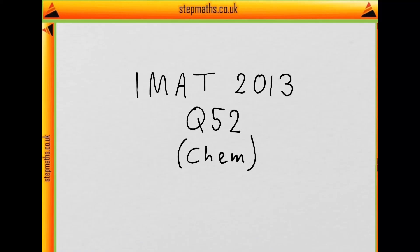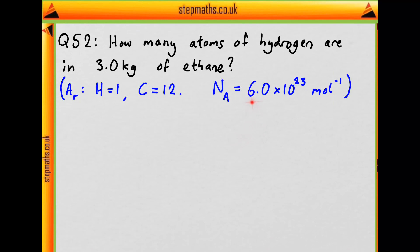This is question 52 on chemistry from the 2013 IMAT. We're asked how many atoms of hydrogen are there in 3 kilograms of ethane, given the relative atomic masses and Avogadro's number.